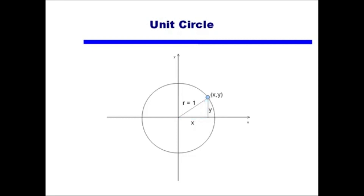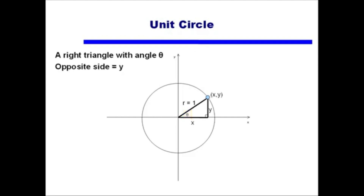If we look at this, what we've just done looks like a right triangle. We've talked a lot about right triangles so far this course. Let's look at this right triangle and call our angle theta. If I look at theta and look at my x, my y, and my radius — which, because we're dealing with a unit circle, is equal to 1.